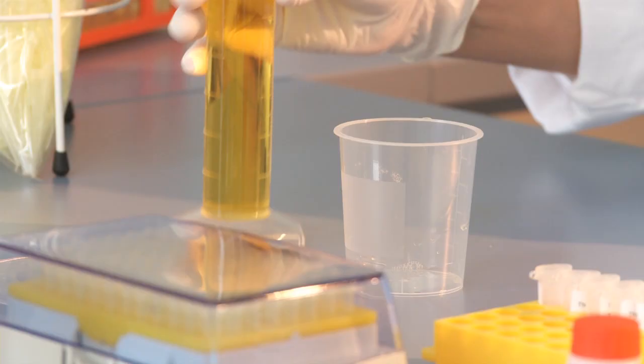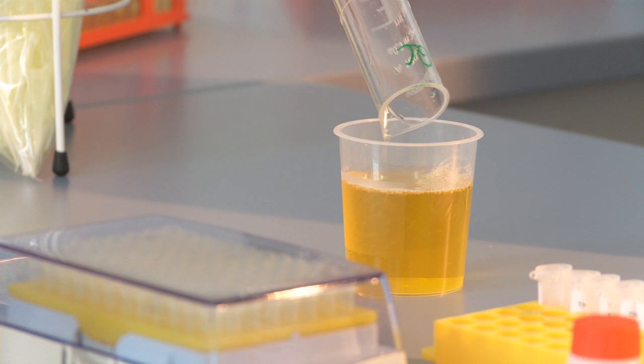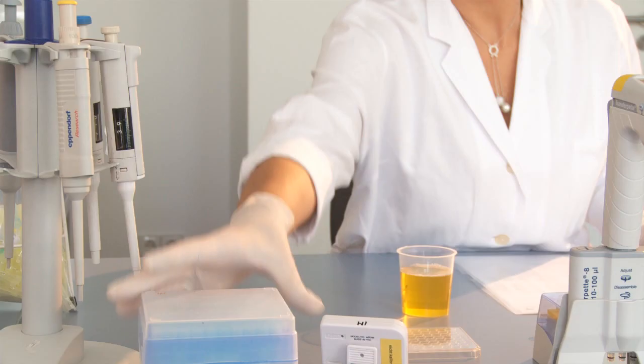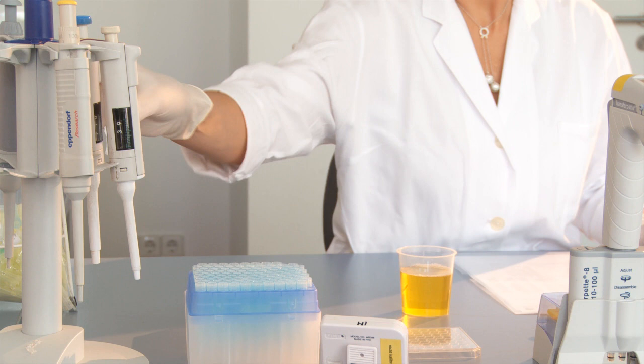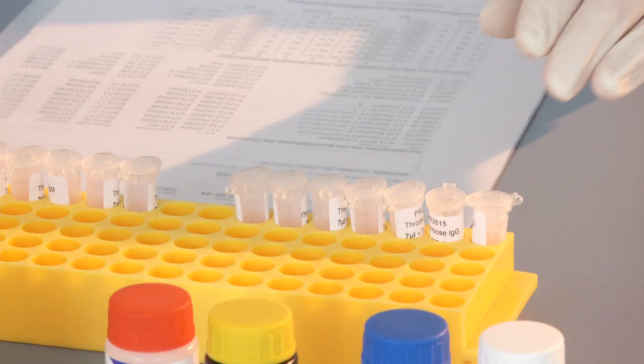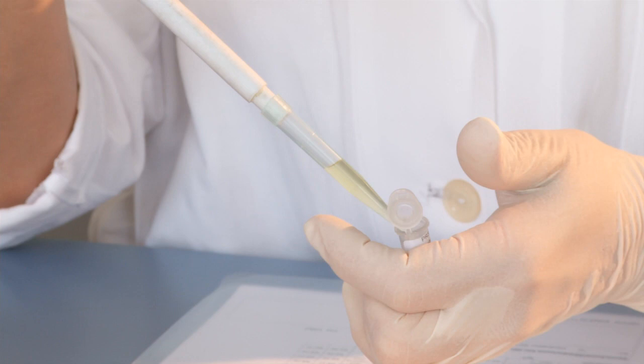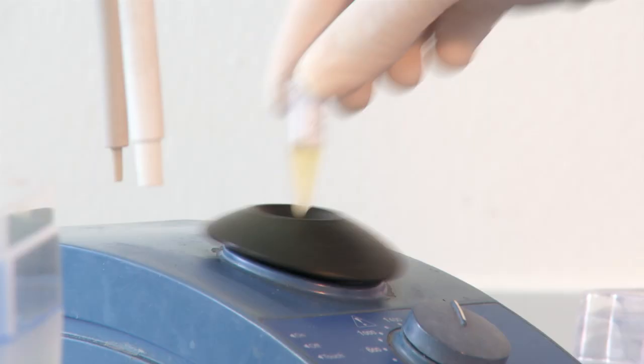To obtain values within the range of the standard curve for proper evaluation, the serum samples must also be diluted in a 1 to 100 ratio with the sample buffer. The sample dilutions should be freshly prepared for every test. 10 microlitres of the serum sample are prepared and 1 millilitre of sample buffer is added by pipette. The samples are then thoroughly mixed.